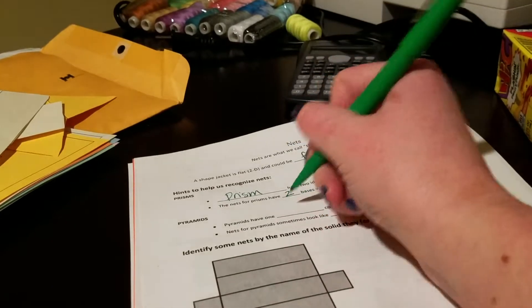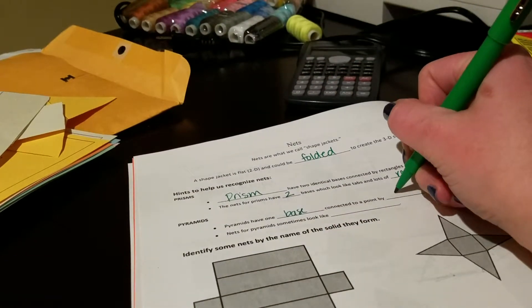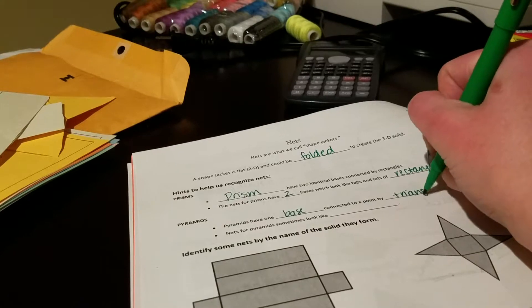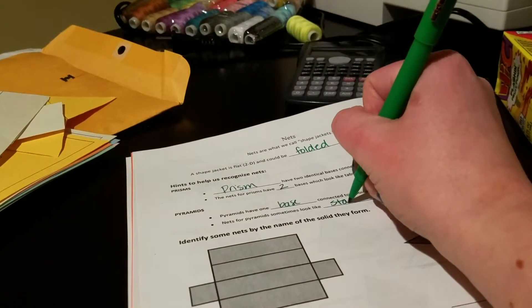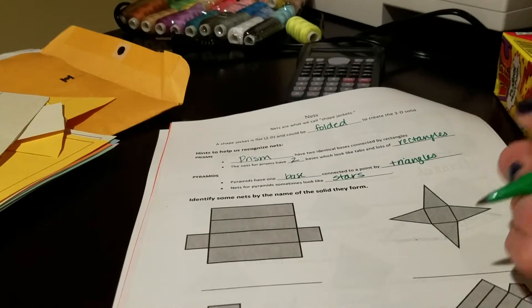If you're a pyramid, pyramids have one base, and that's connected to a point by triangles. So nets for pyramids sometimes look like stars, actually, when you look at them on paper.